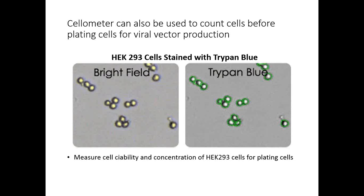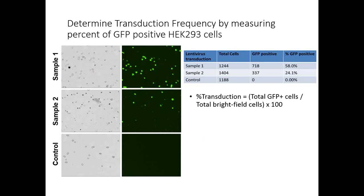The cellometer can also be used to count cells before plating for viral vector production. In this example, HEK-293 cells stained with trypan blue are counted using the cellometer Auto T4 to ensure the correct number of cells are plated. Additionally, the fluorescence capability can be used to look at GFP-positive cells to measure transduction frequency — counting total cells in bright field and GFP-positive cells in fluorescence to calculate percent transduction efficiency.